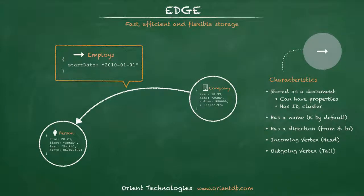An edge is a term used to describe a direct relationship between two vertices. An edge is the magic that provides the amazing performance graph databases can achieve when traversing data. An edge is stored in the database similarly to other data, as a document. The document class is a member of the special E class or one of its derivative classes. As mentioned previously, an edge can contain properties to further enrich the meaning, and they also have a to and from property to identify direction. By default, if an edge has no properties, it's created as a lightweight edge, which is similar to a link and has no document of its own.